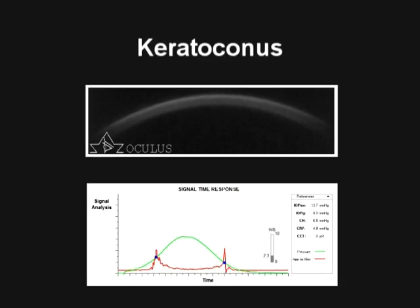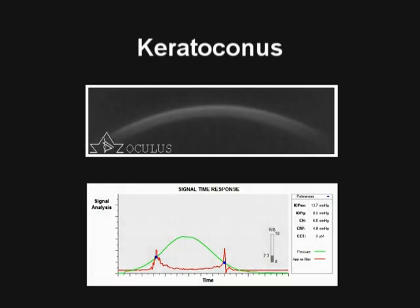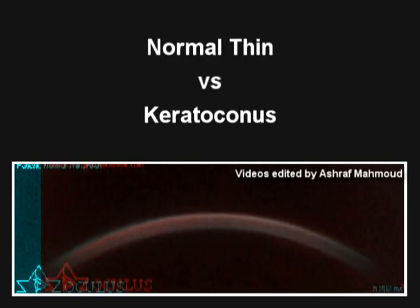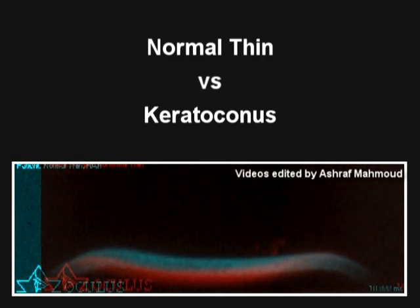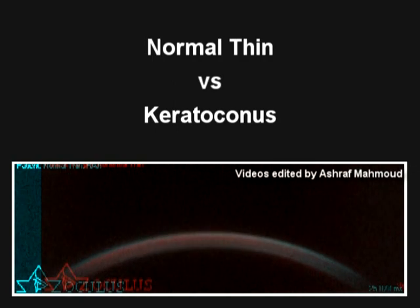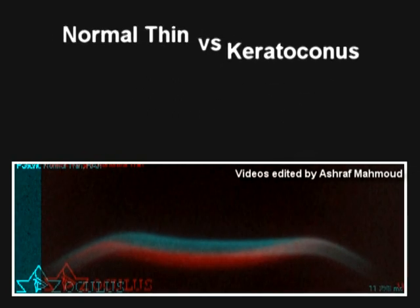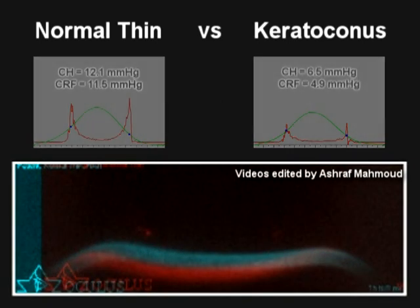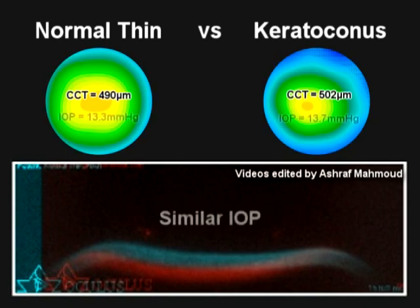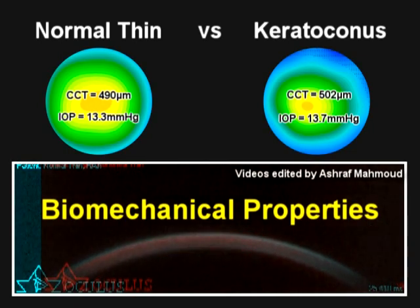Shown here is a cornea with keratoconus that has similar thickness to the previous normal cornea. If the two corneas are pseudo-colored and then superimposed and synchronized in time during the application of the air puff, one can appreciate the differences in the deformation characteristics. The red keratoconic cornea deforms almost a full corneal thickness more than the normal cornea with similar thickness and similar IOP. This difference is due to the biomechanical properties of each cornea.